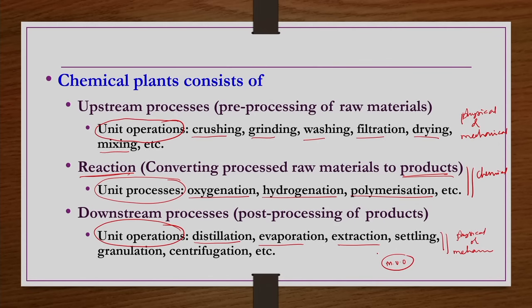This course is on production of inorganic chemicals only. There are separate courses in UG chemical engineering curriculum where we study the mechanical unit operations, mass transfer, heat transfer, and chemical reaction engineering — where a variety of unit processes are discussed. However, we will be discussing basics of unit operations and unit processes in the first week of the course.